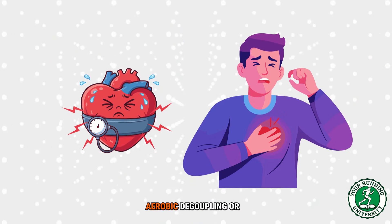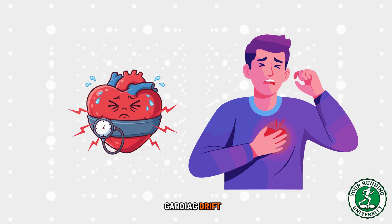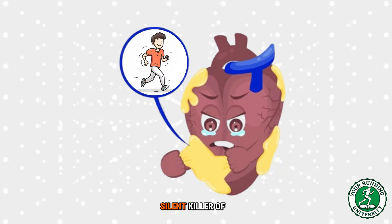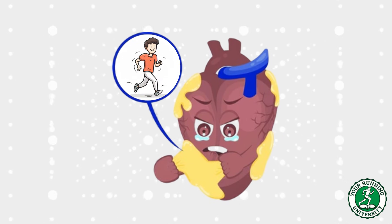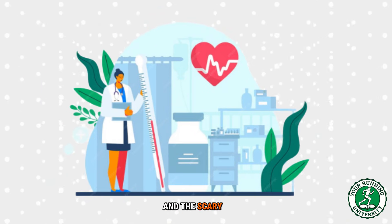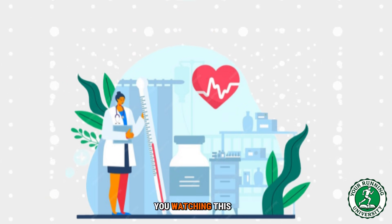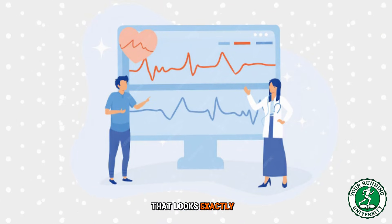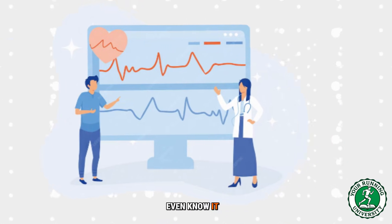This is called aerobic decoupling, or cardiac drift. It is the silent killer of endurance performance. And the scary part? 90% of you watching this have a graph that looks exactly like this and you don't even know it.